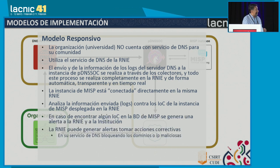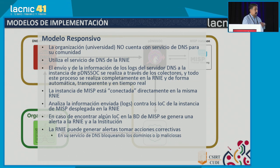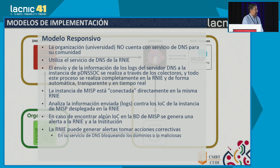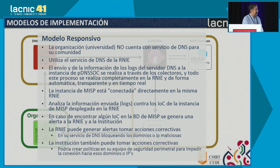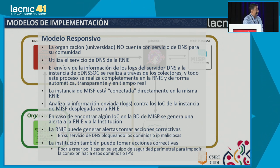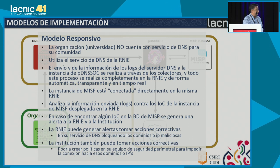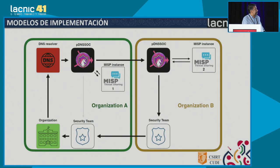If we find an indicator, an alert is sent to the institution. In this case, we could take some corrective actions because we can control our own DNS server. And quite obviously, the institution could also take corrective action in the perimeter security.